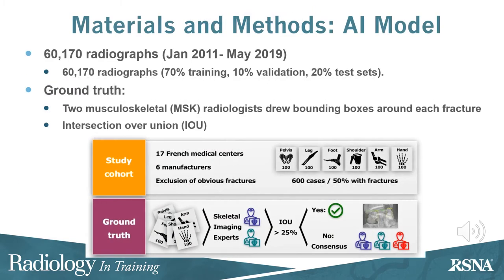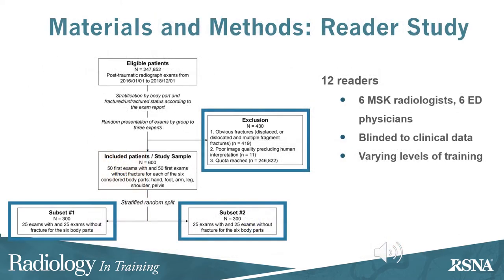The AI model was trained on over 60,000 radiographs, and the ground truth of a fracture was determined by bounding boxes drawn over a fracture by two musculoskeletal radiologists. There were 12 readers in the study: 6 musculoskeletal radiologists and 6 ED physicians, blinded to clinical data and of varying levels of training.